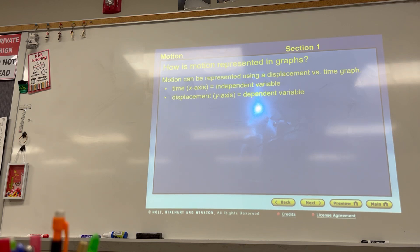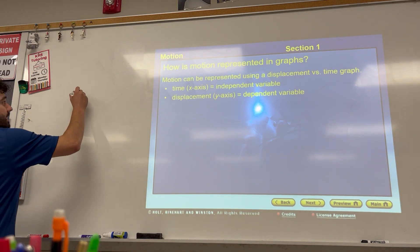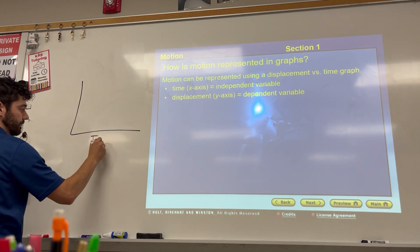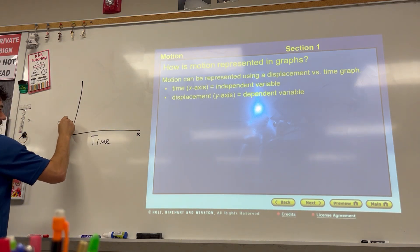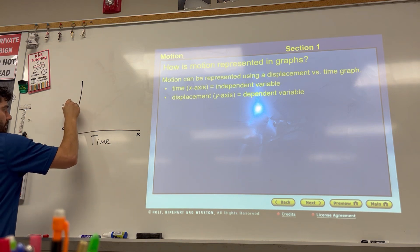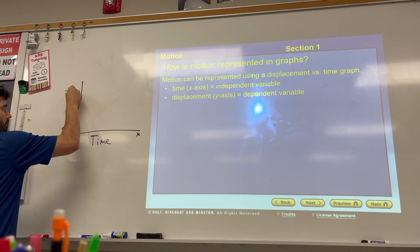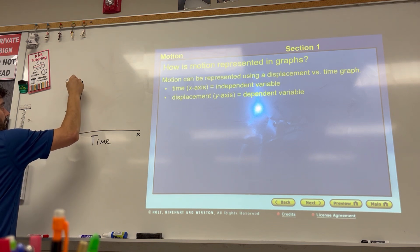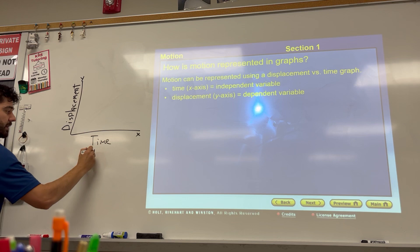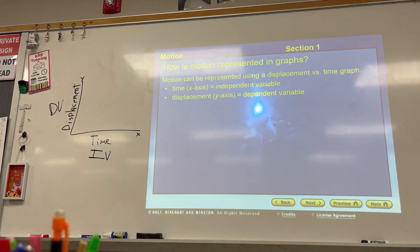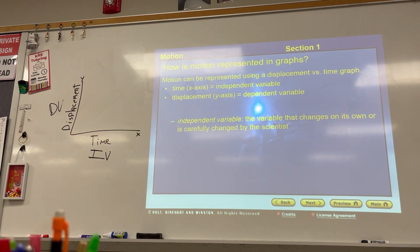In an experiment, the independent variable and the dependent variable both change. So I have time and I have displacement, and they're both changing, but what distinguishes them is what I do with them. My independent variable is the thing that changes on its own, or it's the thing that the scientist changes on purpose.